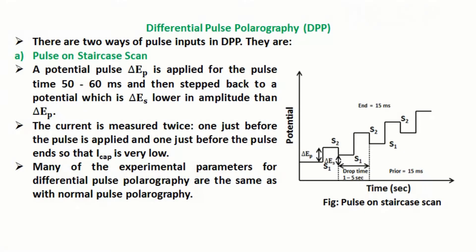There are two ways of pulse inputs in DPP. The first is Pulse on Staircase Scan: a potential pulse delta E_P is applied for the pulse time of 50 to 60 milliseconds, and then stepped back to a potential which is delta E_S lower in amplitude than delta E_P. The current is measured twice — once just before the pulse is applied and once just before the pulse ends — so that the capacitive current I_cap is very low.